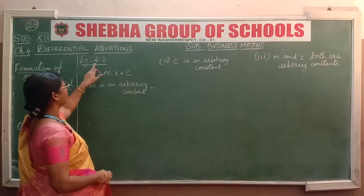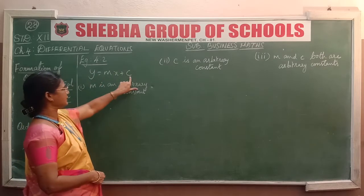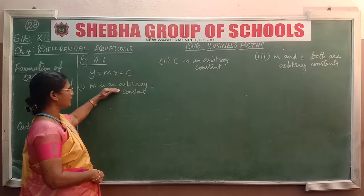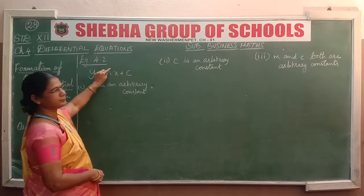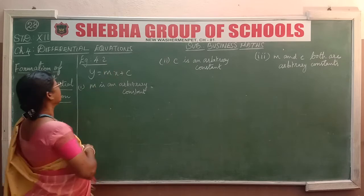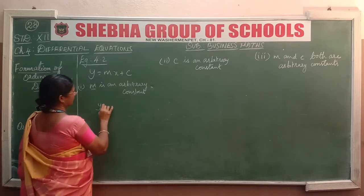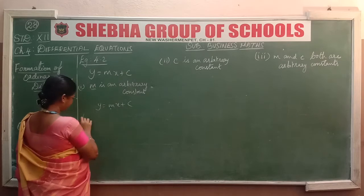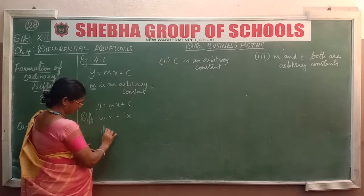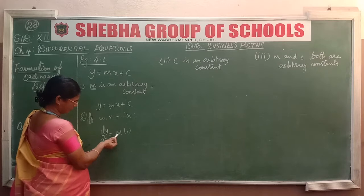Let us see example sum 4.2. The given family of equations of straight lines is y = mx + c. For the first subdivision, m is an arbitrary constant. So we have to eliminate m only. Our required differential equation involves m. Since there is only one arbitrary constant, we differentiate one time. Differentiating with respect to x, we get dy/dx = m × 1. So our m value is dy/dx.